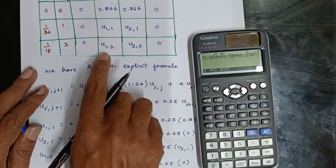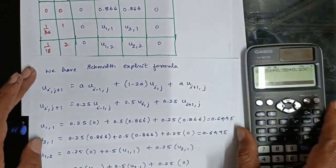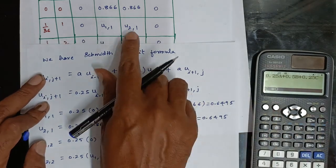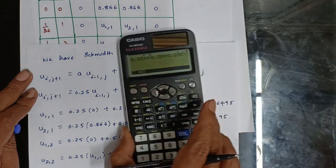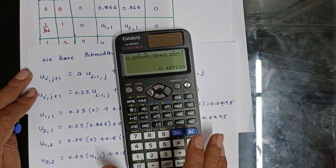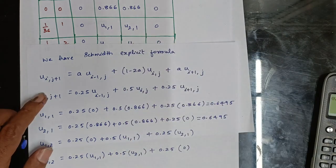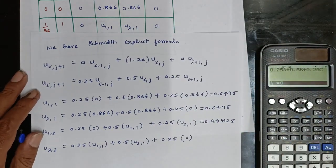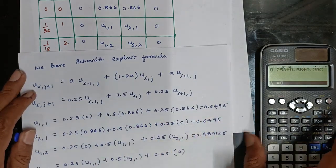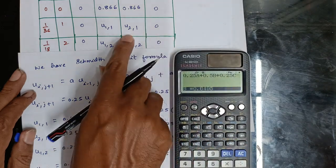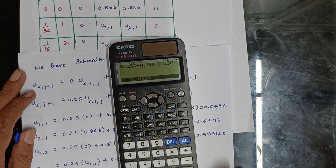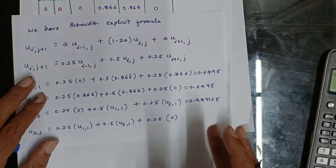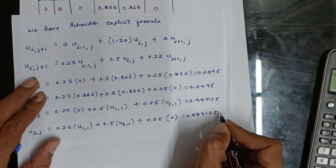For the second time level: u₁₂ = 0.25×u₀₁ + 0.5×u₁₁ + 0.25×u₂₁ = 0.25×0 + 0.5×0.6495 + 0.25×0.6495 = 0.4871. Similarly u₂₂ = 0.4871. The final answers are u₁₁ = u₂₁ = 0.6495 and u₁₂ = u₂₂ = 0.487125.